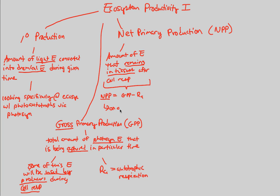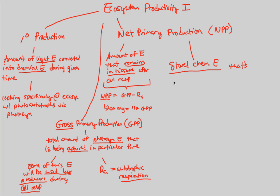On average, the NPP of a primary producer is about one half the GPP. So about half of the energy converted into photosynthetic energy is used for autotrophic respiration, and the other half remains in tissues as stored chemical energy — very valuable stored chemical energy that is available to the next trophic level.